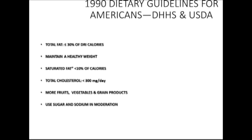In the wake of these recommendations, several organizations including the USDA created a five-a-day fruit and vegetable campaign. The 1990 Dietary Guidelines for Americans advocated for 30% or less of calories from total fat, the importance of maintaining a healthy weight, saturated fat less than 10% of calories, total cholesterol less than 300 milligrams, more fruits, vegetables and grains, and using sugar and sodium in moderation — all reflecting documented problems of low fruit and vegetable intake and heavy food processing in the American diet.